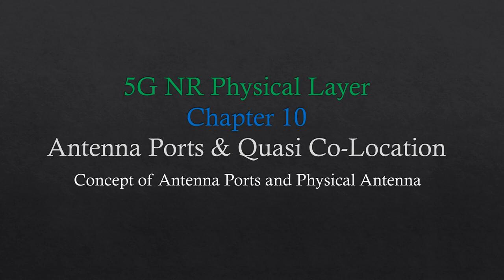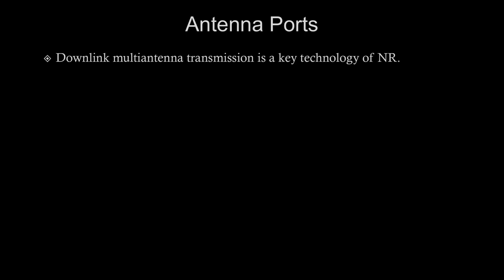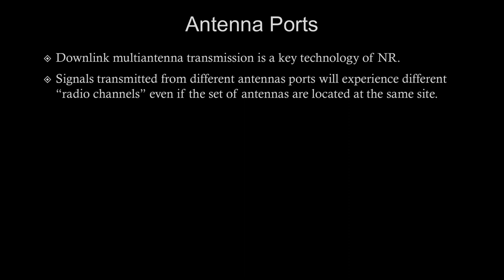We will also understand the difference between antenna ports and a physical antenna. Antenna ports are a key concept in downlink multi-antenna transmission in NR. Signals transmitted from different antenna ports will experience different radio channels. A wireless communication channel is usually modeled as y = hx, where x is the input, y is the output, and h represents the channel coefficient. If signals are transmitted from different antenna ports, the h coefficient will be different; if from the same antenna port, h will be the same for both.